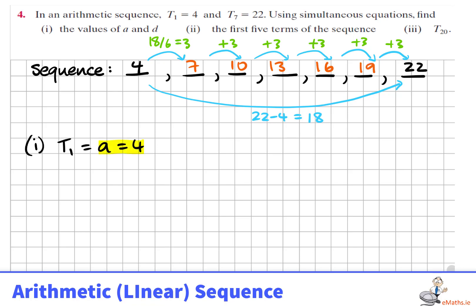by adding 3 to 4, 7, 10, 13, etc. So we see the first term, a is 4, and the difference is d. And we've listed out the first number of terms in the sequence.